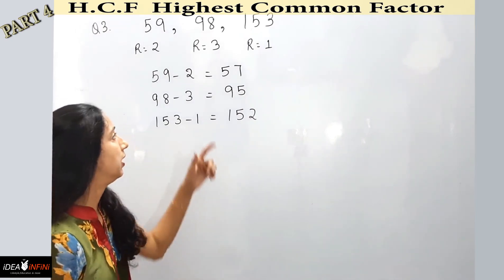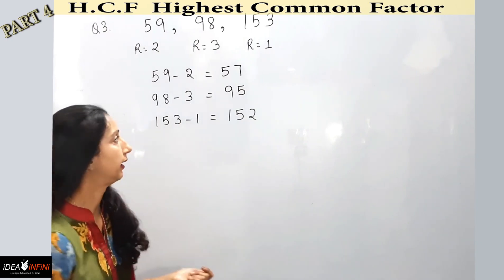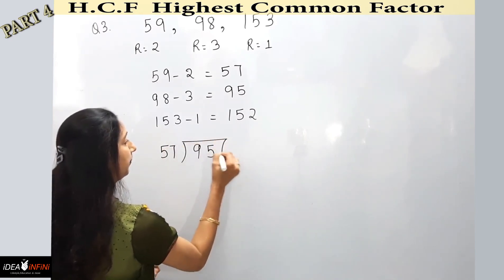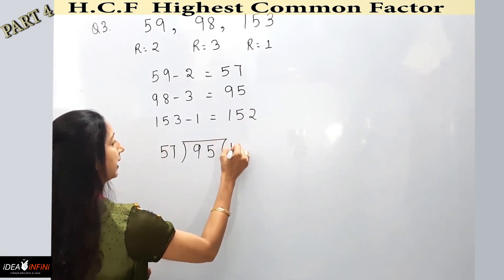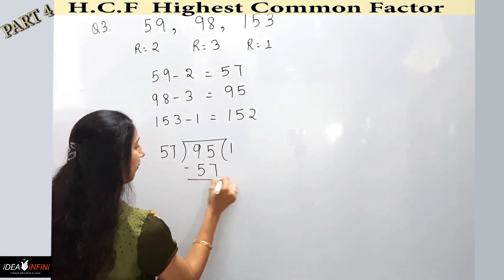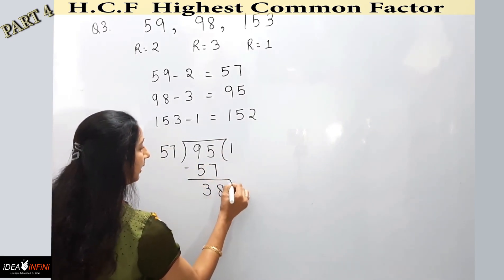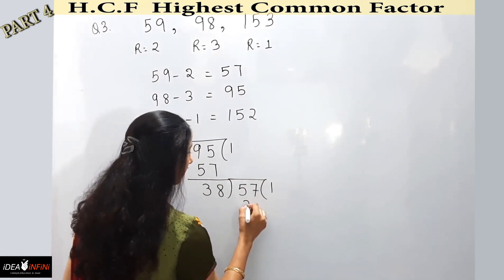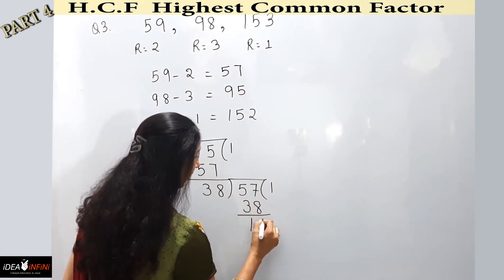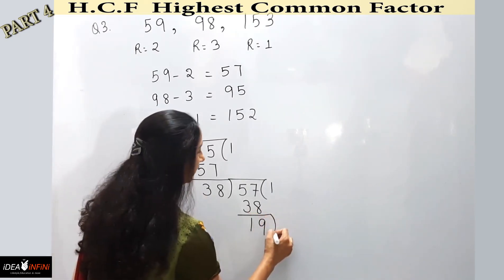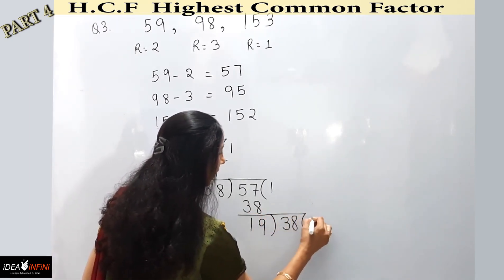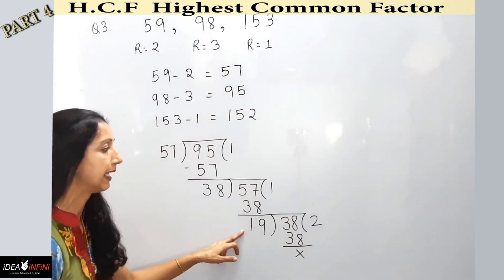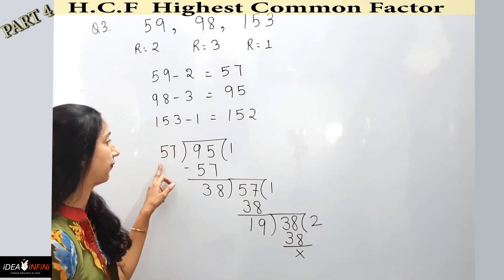Using long division on 95 and 57: 95 is the dividend, 57 is the divisor. 57 ones are 57, remainder 38. That 38 becomes the new dividend: 38 ones are 38 with remainder 19. Now 19 becomes the dividend: 19 twos are 38, remainder 0. So 19 is the HCF of 57 and 95.